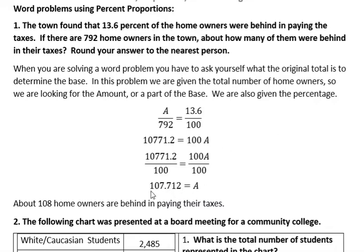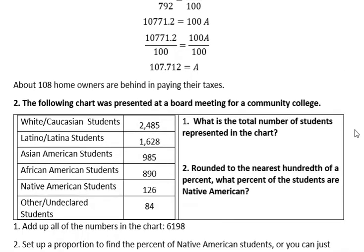They asked to round to the nearest person, so that means about 108 people are behind in paying their taxes.